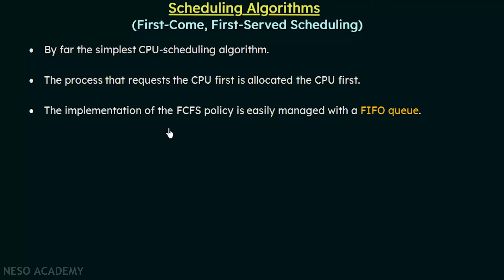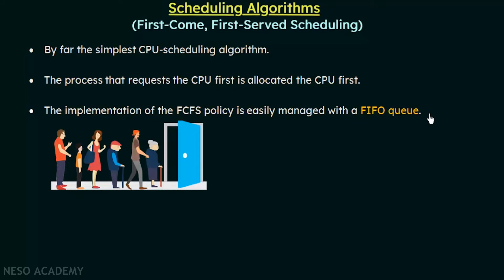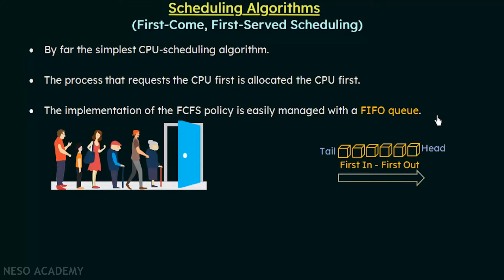The implementation of the FCFS policy is easily managed with a FIFO queue. FIFO stands for first in first out. This is a normal method that we follow in a normal queue. The element that comes in first will be the element to go out first — that means it will complete its work and leave first.